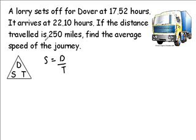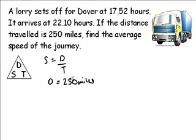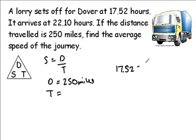Now we're given the distance in the question — D is 250 miles. We're also given enough information to work out time, because the lorry sets off at 17:52 hours and arrives at 22:10 hours.